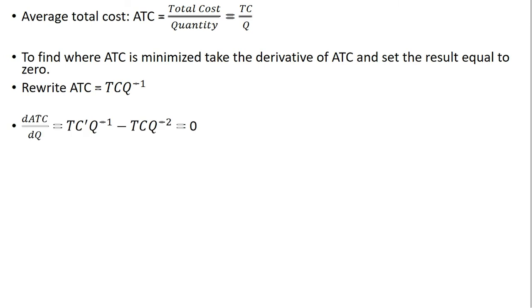So the derivative of average total cost, I'm going to take the derivative of TC. So TC prime here is the derivative of total cost, and then it's just Q raised to the power of minus one. And then the next part here, we're going to leave TC alone, but just concentrate on taking the derivative of the Q term.